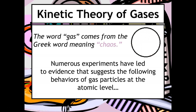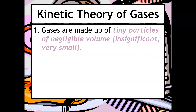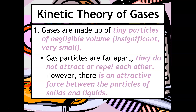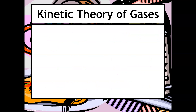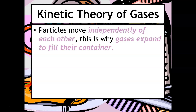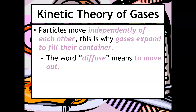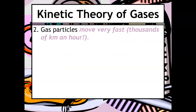Scientists have engaged in many experiments that have led to evidence suggesting the following behaviors of gases. The first principle is that gases are made up of tiny particles of negligible volume — negligible means really small or insignificant. Gas particles are usually very far apart, therefore they do not attract or repel each other. We as scientists assume there are really no attractive forces between those particles. Particles move independently of each other, which is why gases will expand to fill their container — we say they diffuse. Gases also have no definite volume.